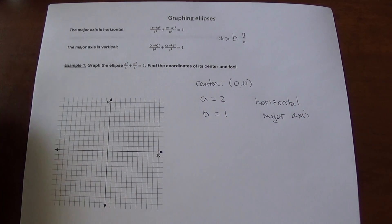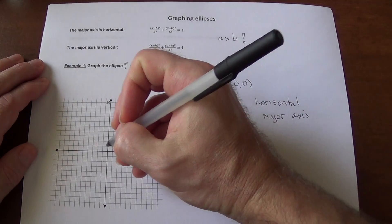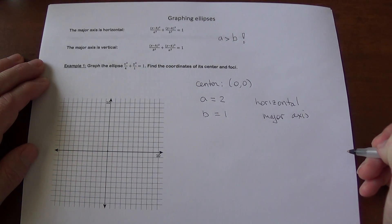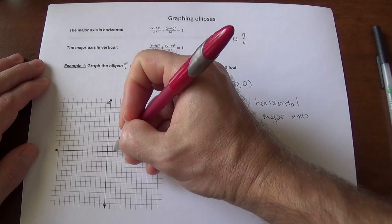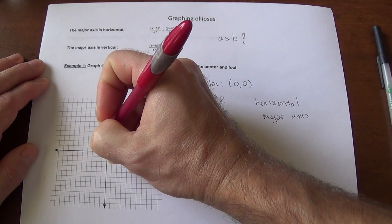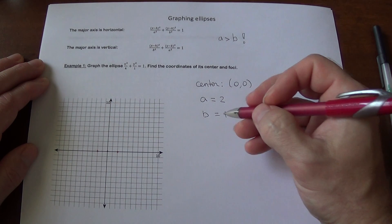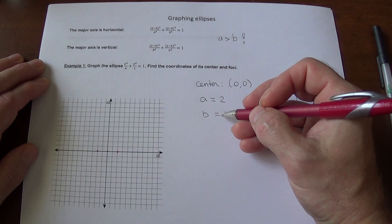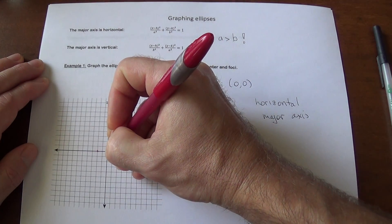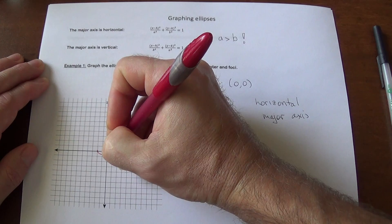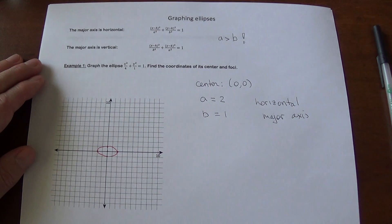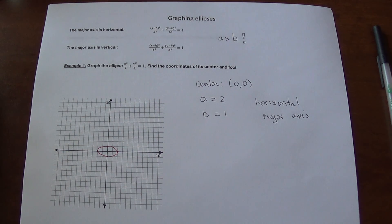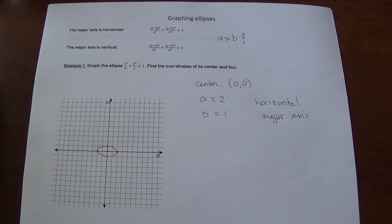So how do we use these two numbers? We start with the center at the origin (0, 0), then go horizontally with the value of 2 — 2 units to the right and 2 units to the left. Then b is the value related to the minor axis, so that's 1 unit up and 1 unit down. Then we carefully connect them. It's not perfect, but that's what it's going to look like — pretty basic because the center is at the origin.